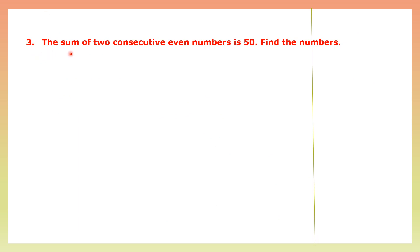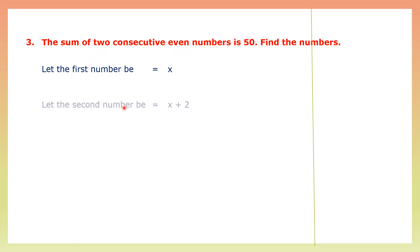Question 3: The sum of two consecutive even numbers is 50. Find the numbers. Consecutive means numbers that come one after the other. Even numbers are like 2, 4, 6, 8, and the difference between them is 2. Let the first number be x. Since we have two consecutive even numbers, the second number will be x plus 2. The sum of the two numbers is 50.